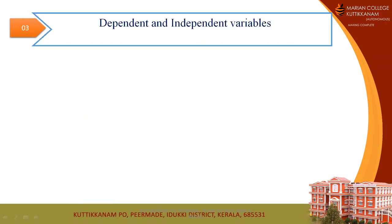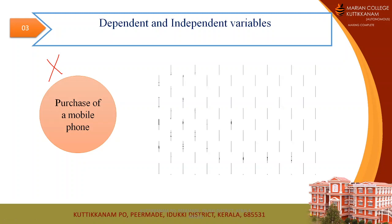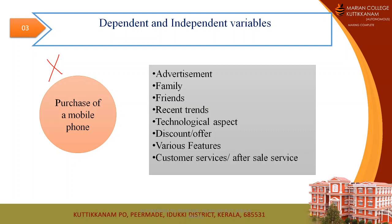First, we move on to the dependent and independent variable. I will explain this with the help of an example. Suppose you decided to purchase a mobile phone of any brand. Before you finalize your decision, you will consider some factors. Those factors may include advertisement, family, friends, recent trends, technological aspects, some kind of discount, and features like camera, battery backup, or customer service after sale service.